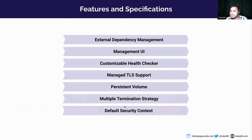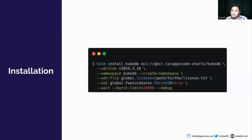Sometimes clusters have various security context options, and KubeDB supports those security context options when provisioning FerretDB into the cluster. Here is the KubeDB installation command — we just need to set the `global.featureState.ferretDB` flag to true while installing KubeDB into your cluster. The full installation process link will be given in the description.